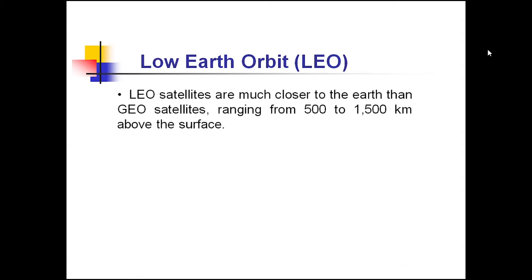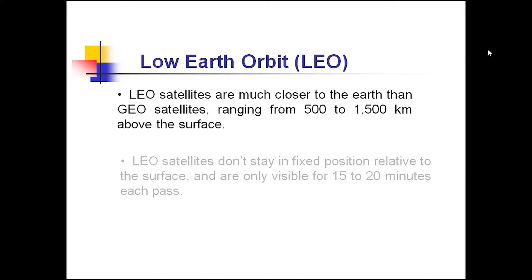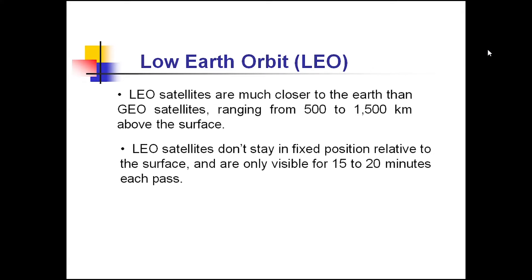LEO satellites are much closer to the Earth than GEO satellites. They are lifted ranging from 500 km to 1500 km above the surface. LEO satellites do not stay in a fixed position with respect to the surface of the Earth, and therefore they are visible only for 15 to 20 minutes for every pass.